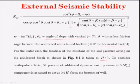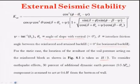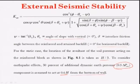For the static case, the resultant of soil pressure acting on the reinforced block is taken at H/3 from the base. To account for earthquake effects, 50% of the additional dynamic earth pressure (0.5 ΔP_AE) is assumed to act at 0.6H from the bottom of the wall.